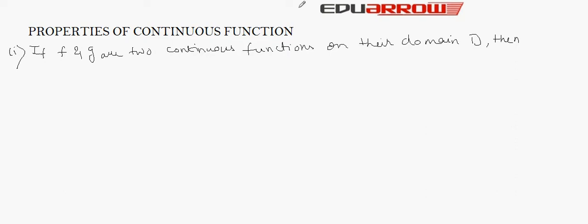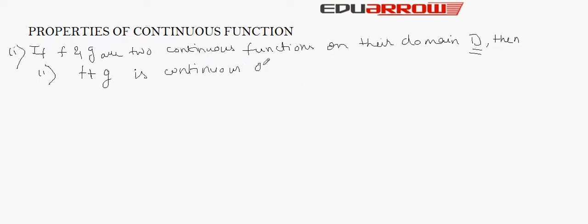The first property says that if f and g are two continuous functions on their domain d, then the addition of both the functions is also continuous on d.